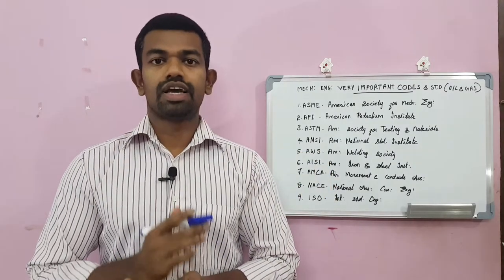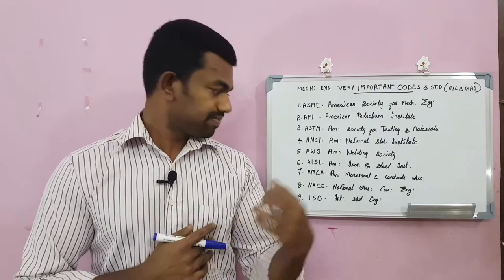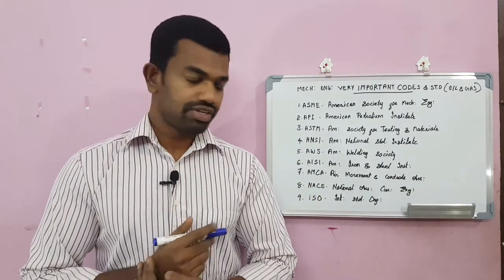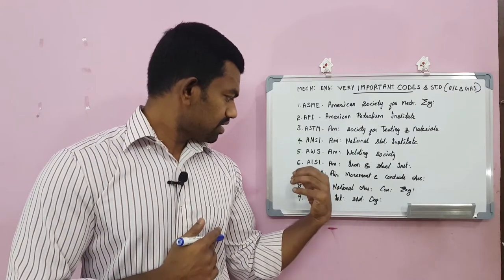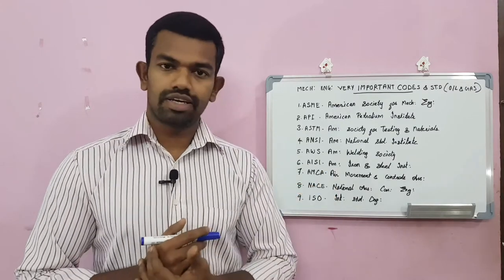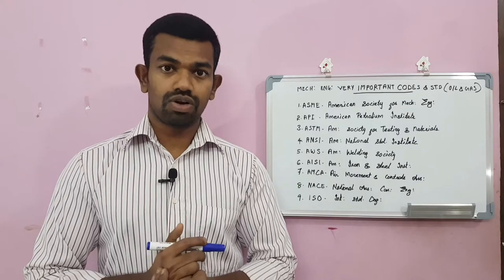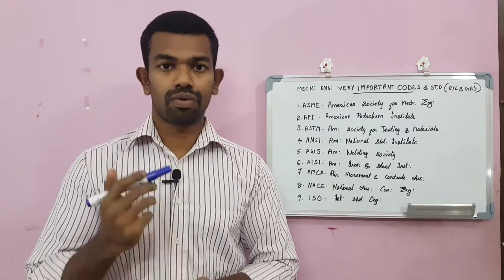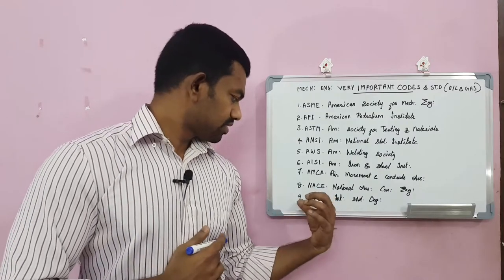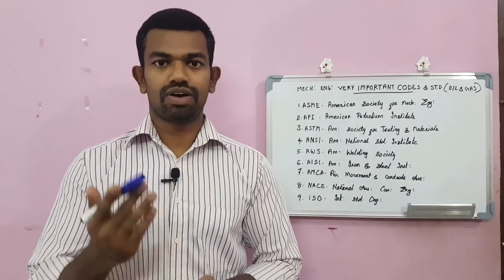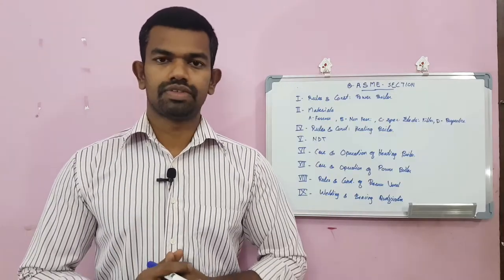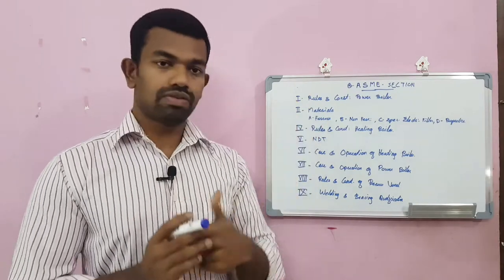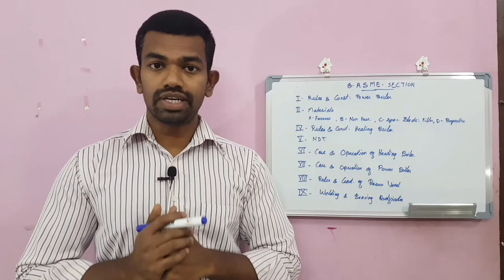Next is AWS — American Welding Society. Then AISI — American Iron and Steel Industries. Seventh is AMCA — Air Movement Control Association. Then NACE — National Association of Corrosion Engineers. And finally ISO — International Standards Organization.